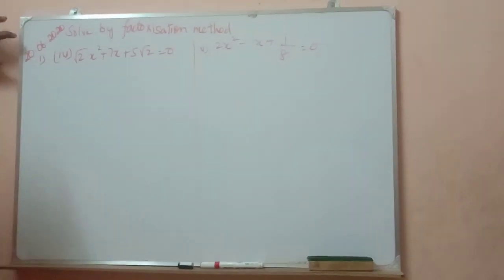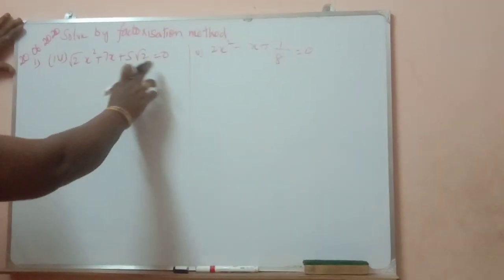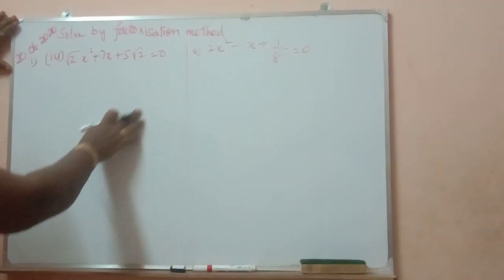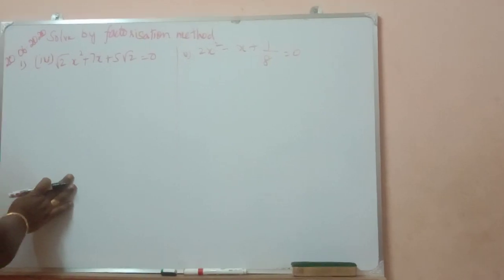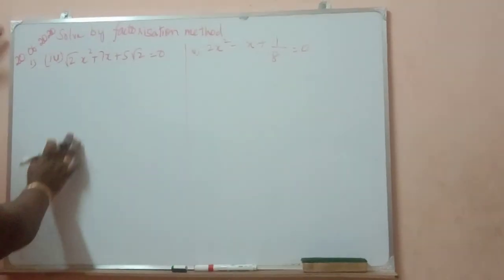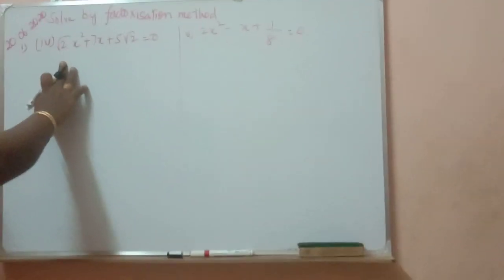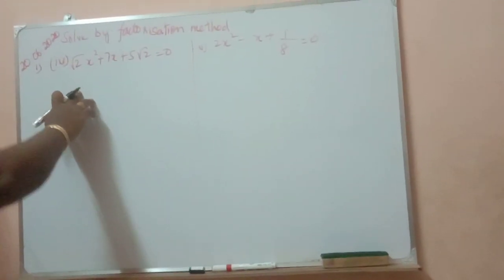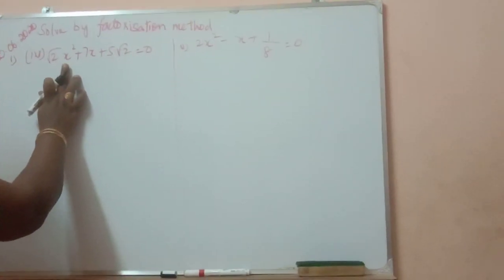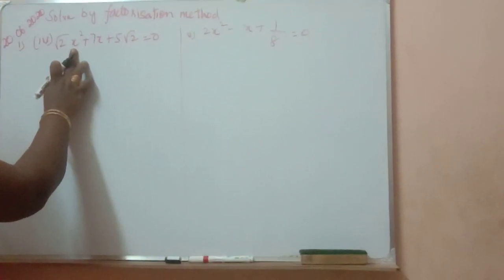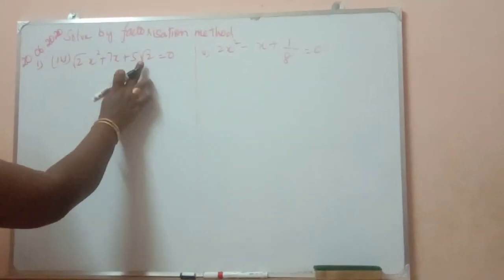Good morning, sir. We completed 3 sums. This is the 4th one. So, after you multiply, 5 and a half expire under constant.